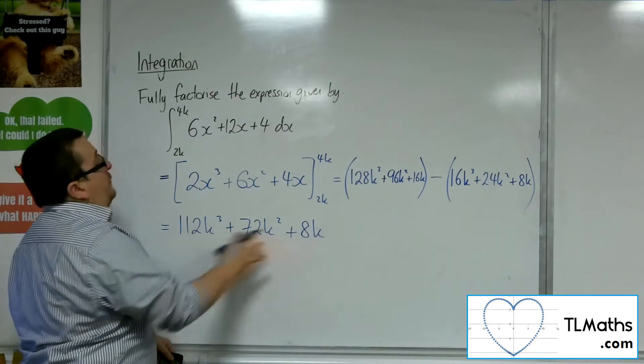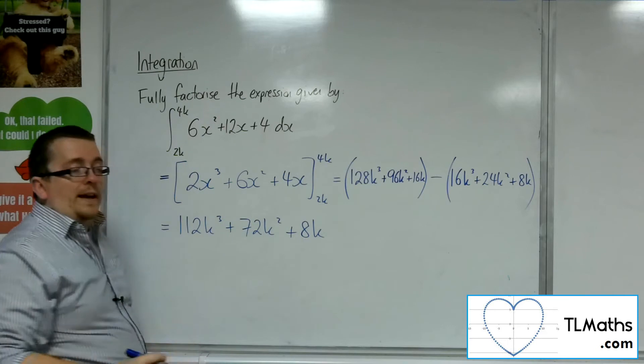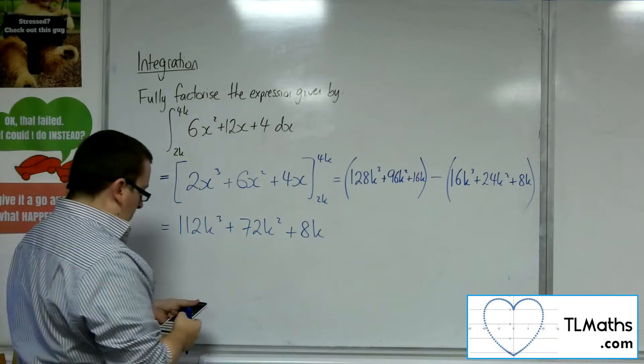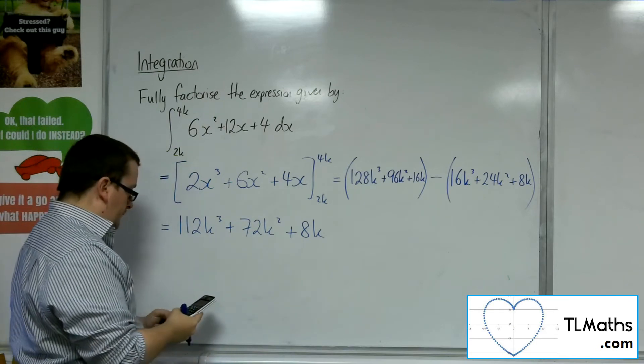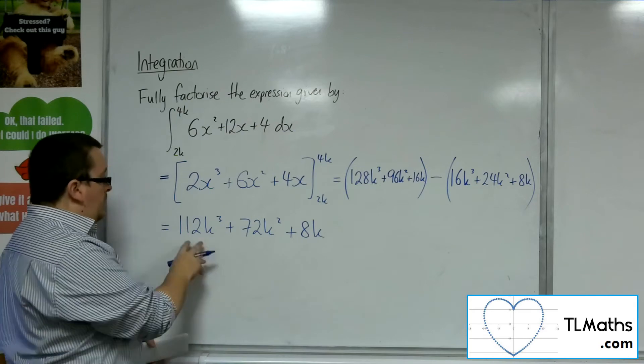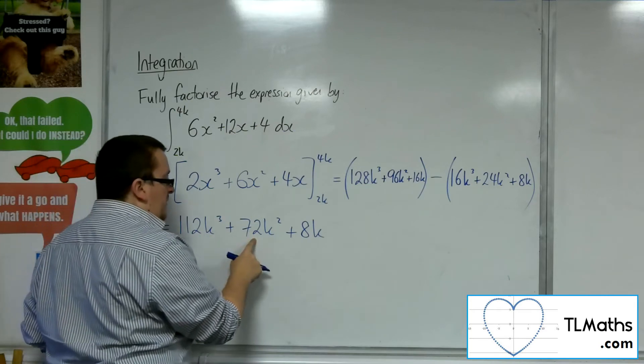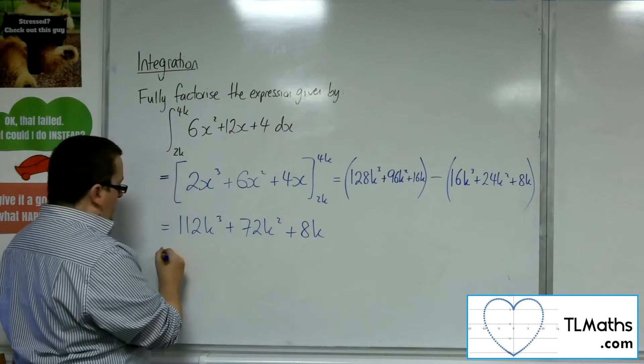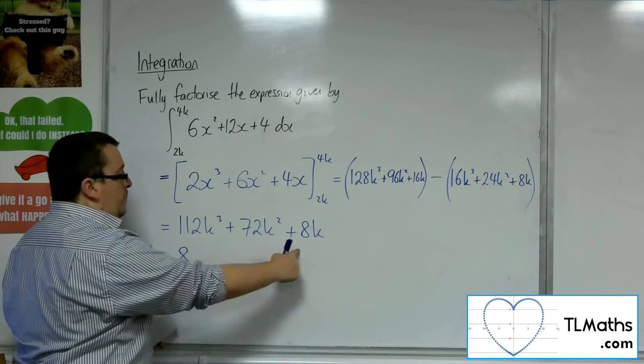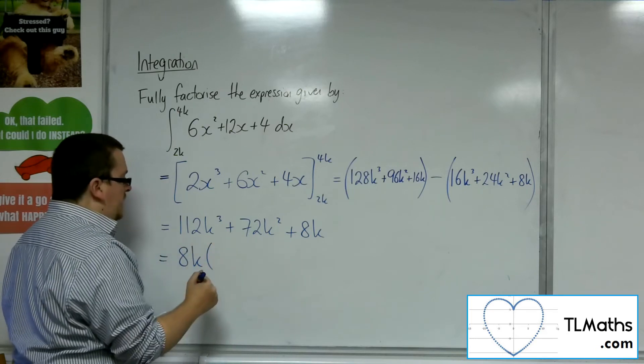Now I'm asked to factorise that, I want it fully factorised. So the 112k is divisible by 8, the 72k is divisible by 8, so is that. So I can pull out 8, and I can pull a k out of a single bracket.